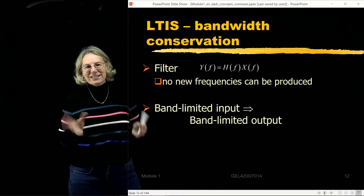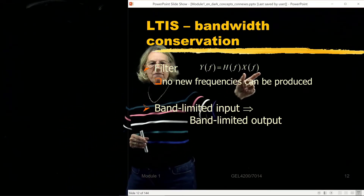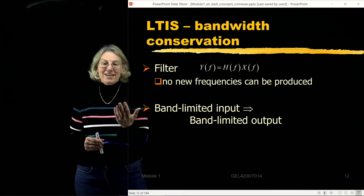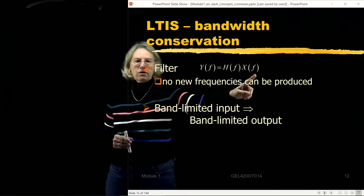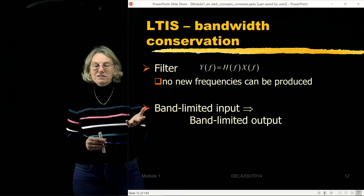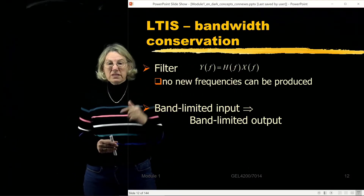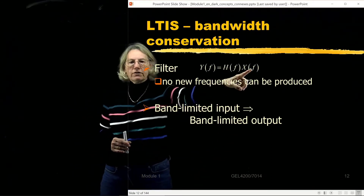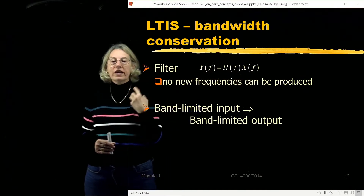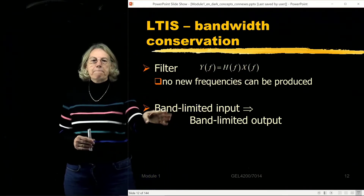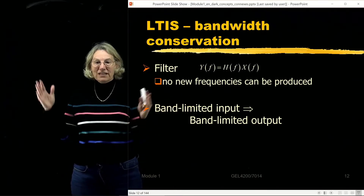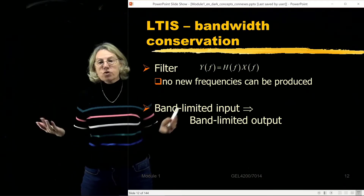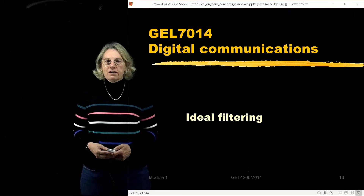If x of f is zero for a certain frequency — that is, x of f has no content at a certain frequency — then it doesn't matter what my system does. It's going to be multiplied by zero, so the output will be zero. No new frequencies can be created; the only frequencies at the output were already present at the input. So if I have a band-limited input, the output will also be band-limited.